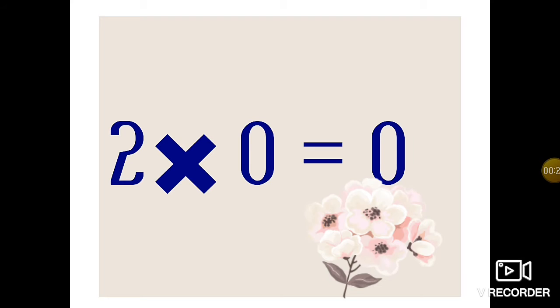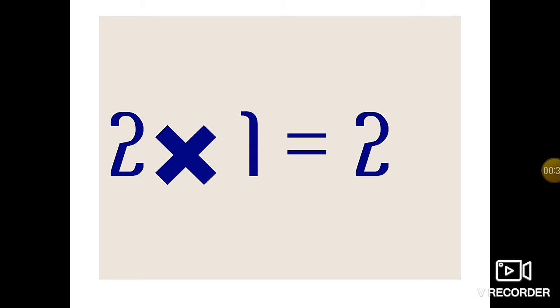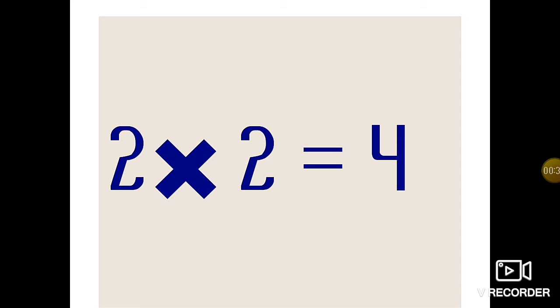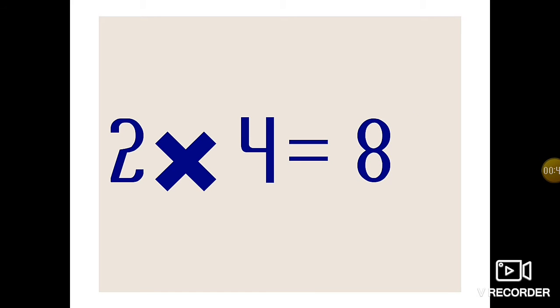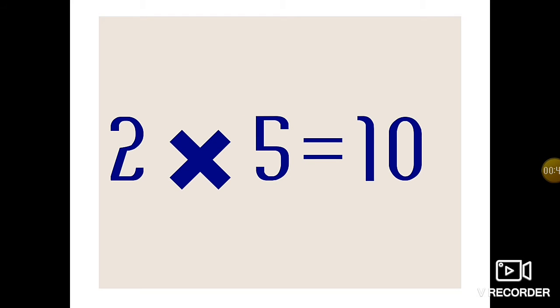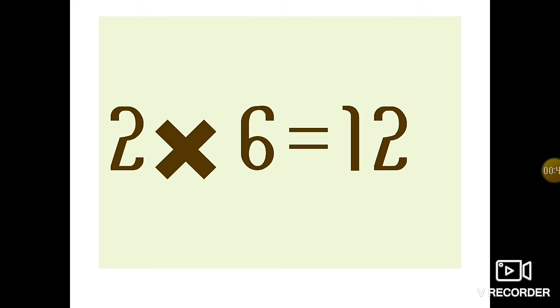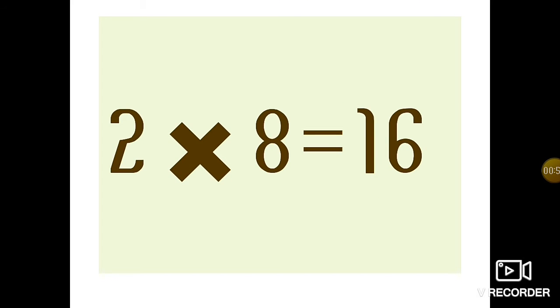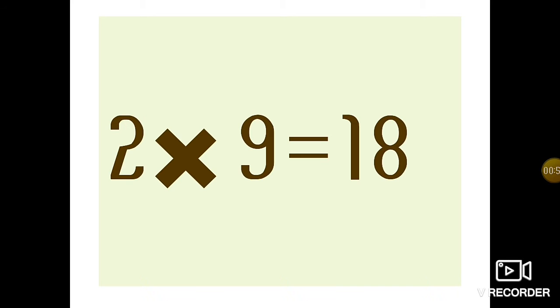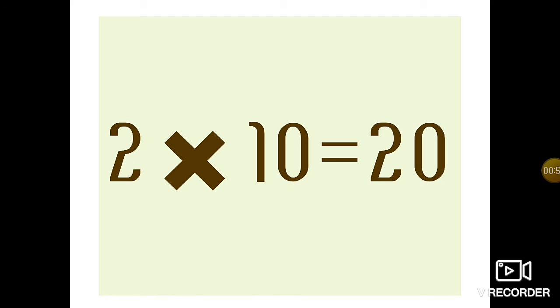You all will repeat after me. 2 0s are 0, 2 1s are 2, 2 2s are 4, 2 3s are 6, 2 4s are 8, 2 5s are 10, 2 6s are 12, 2 7s are 14, 2 8s are 16, 2 9s are 18, 2 10s are 20.